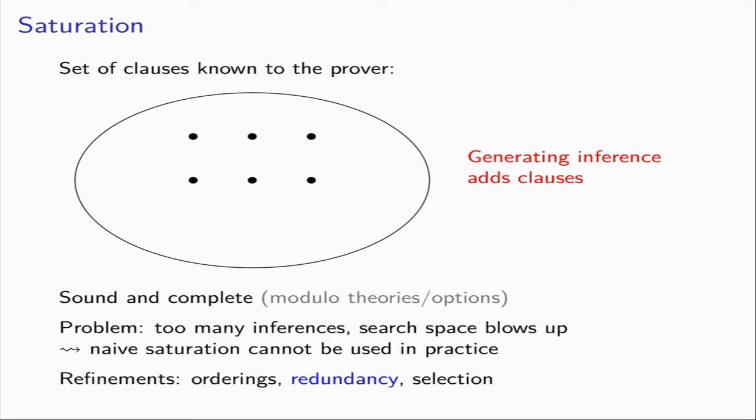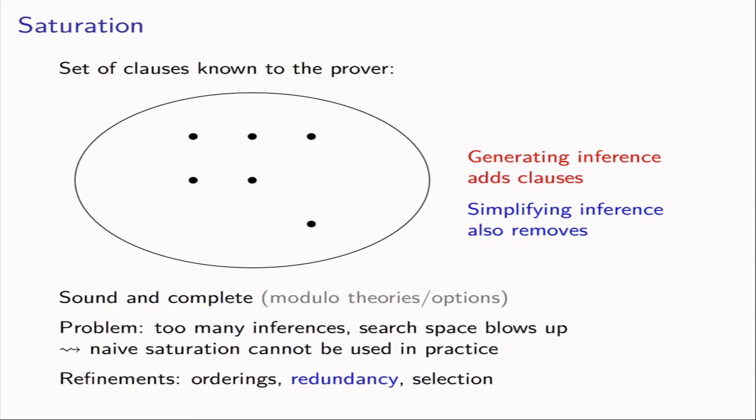There are several refinements to improve the situation, like orderings, redundancy, and selection. Regarding redundancy: sometimes when we perform an inference, we discover that one of the premises becomes redundant, meaning we can delete it from the space without losing any relevant consequences. We call these simplifying inferences, because the new clause is in some sense simpler than the one replaced. Note that after a simplifying inference, the set of clauses known to the prover remains the same size. Before formally defining redundancy, we need to talk about orderings.